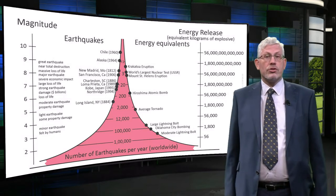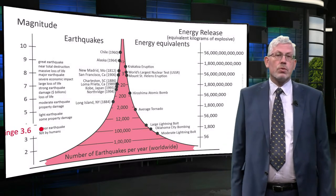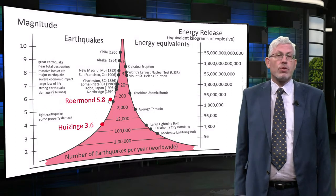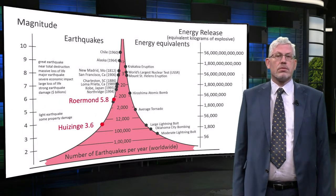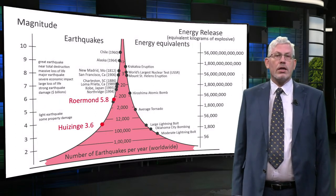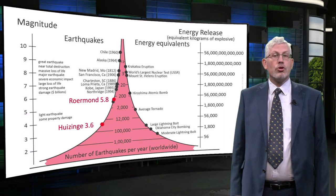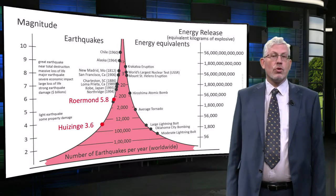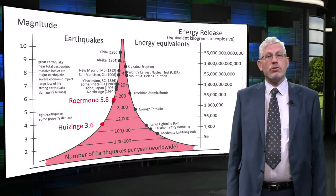For instance, the Huizinge earthquake in 2012 had a magnitude of 3.6. This is about 900 times less energy than the Roermond earthquake in 1992, which had a magnitude of 5.8.